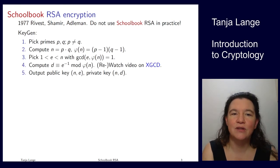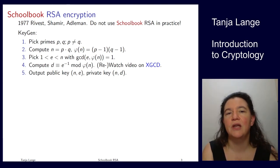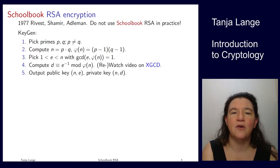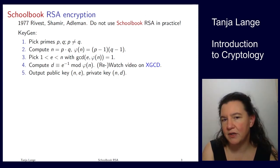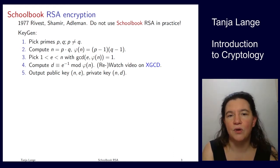There are three algorithms: key generation, encryption, and decryption. In key generation, we start by picking two different primes and computing their product. So n is p times q. There is also the Euler phi function, or Euler totient function — if you don't recall what this is, I have it on the next slide. In short, you can compute this as (p−1) times (q−1). Then you pick some exponent e which is coprime with phi of n.